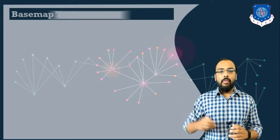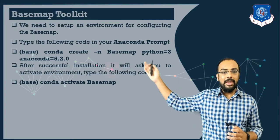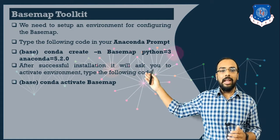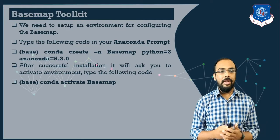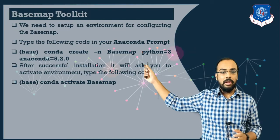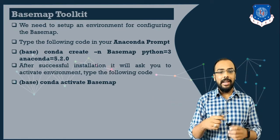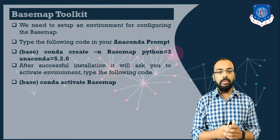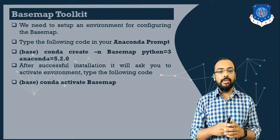Next, we will look at the basemap toolkit. Whenever you want to plot geographical data in Jupyter Notebook, you need to install this basemap toolkit. In Python 3 this library has become deprecated, but we will still use it. To do so, we create a virtual environment in Anaconda prompt using the syntax: conda create -n basemap python=3 anaconda=5.2.0.